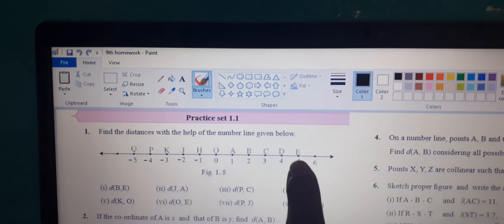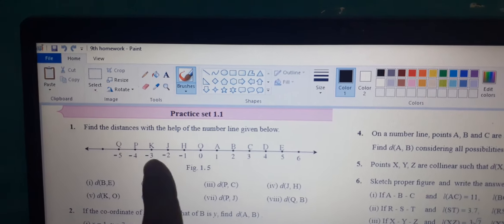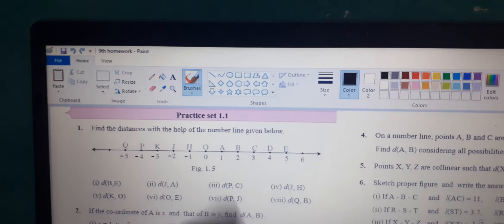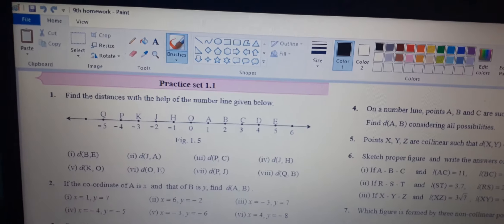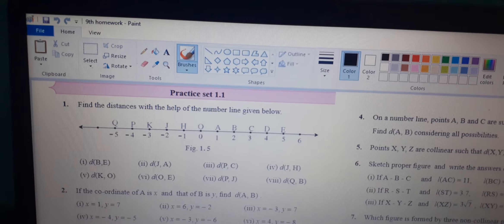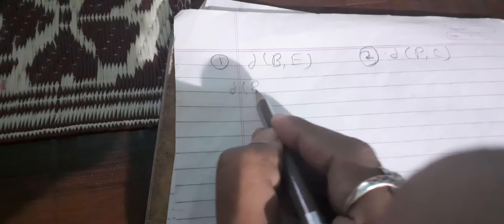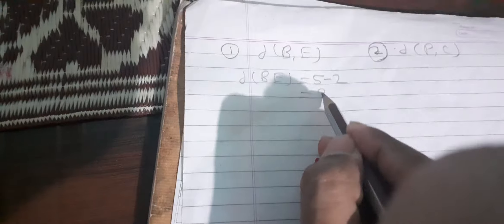Who is the bigger one? 5 is bigger. So distance BE: B is 2 and E is 5. 5 minus 2, the answer is 3.